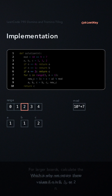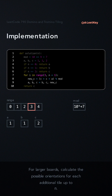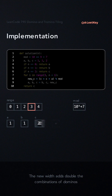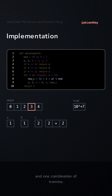For larger boards, we calculate the possible orientation of each additional tile up to n. The new width adds double the combination of dominoes and one combination of tromino.